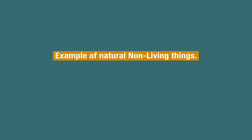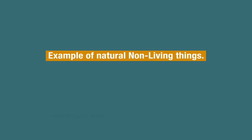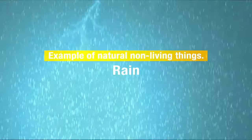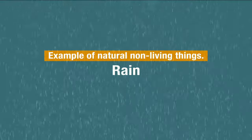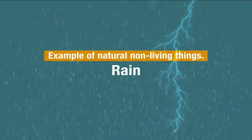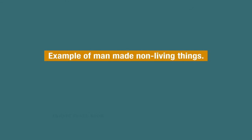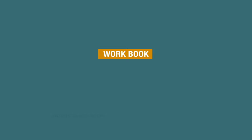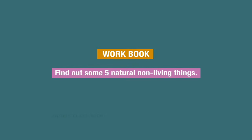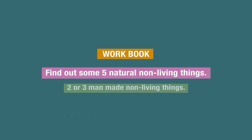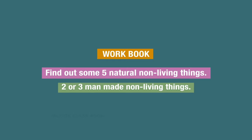For example of a natural non-living thing: it is raining right now, isn't it? Rain is not a living thing — it is a non-living thing, and it is not made by anybody; it comes naturally. So rain is a natural non-living thing. Your work for today is to find two to five natural non-living things not given in the textbook, and two to three man-made non-living things.